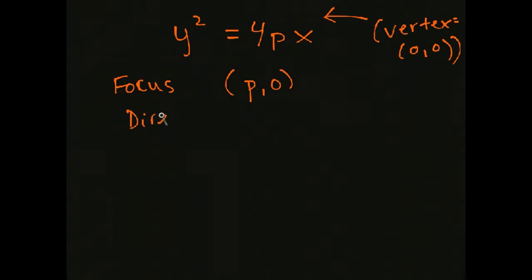And then the directrix is x equals negative p, because these are going to be vertical lines now instead of horizontal since we've flipped the axis. All right, so let's take a look at an example.